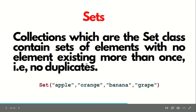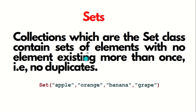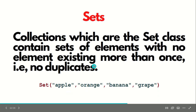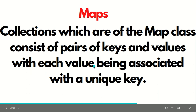Next, we have a set. The collections which are of the set class contain sets of elements with no element existing more than once — it means there will be no duplicacy in the data. We can see here: apple, orange, banana, and grape. This is how we can define the set.